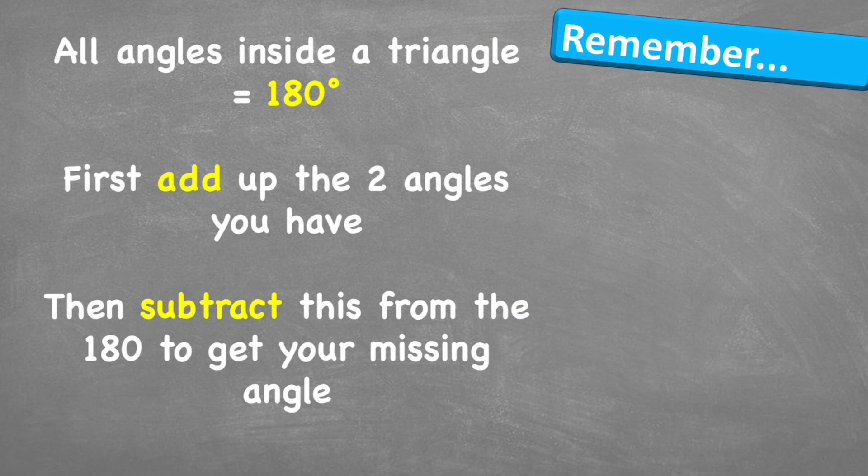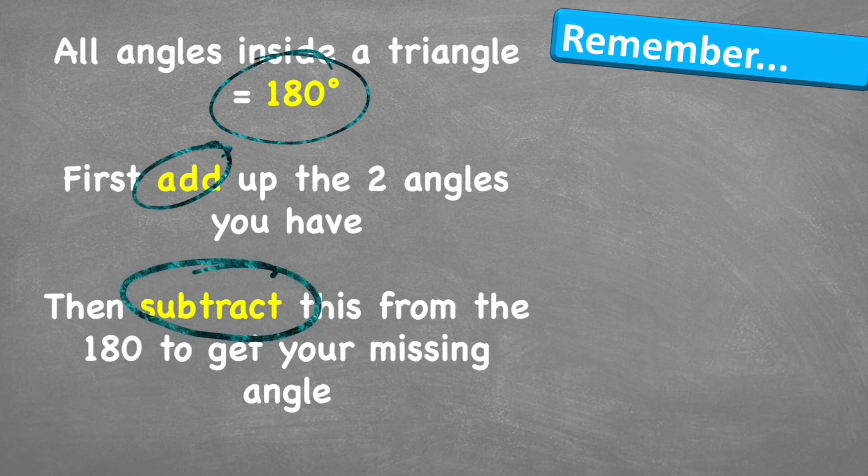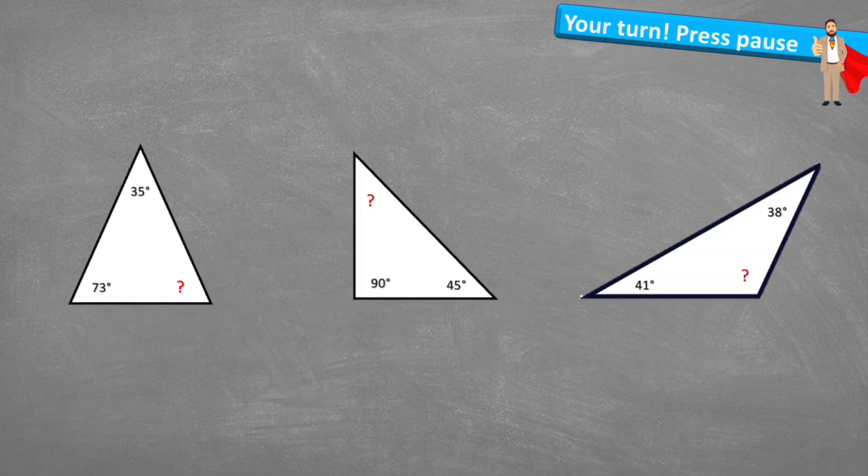Let's have a look at what to remember. Remember first that all angles inside a triangle equal 180 degrees. That is going to be our really helpful fact. First then we add up our two angles that we already have and then subtract that number away from our 180 to get our missing angle. Okay three questions for you to have a little look at.